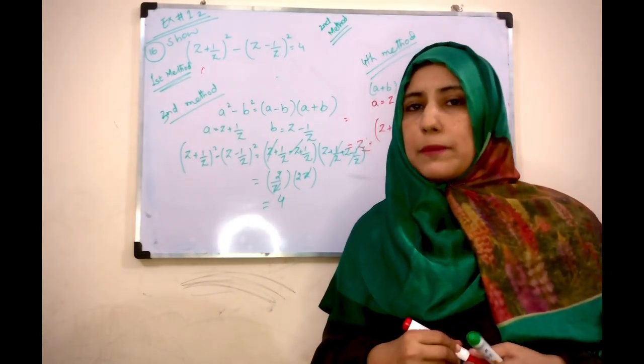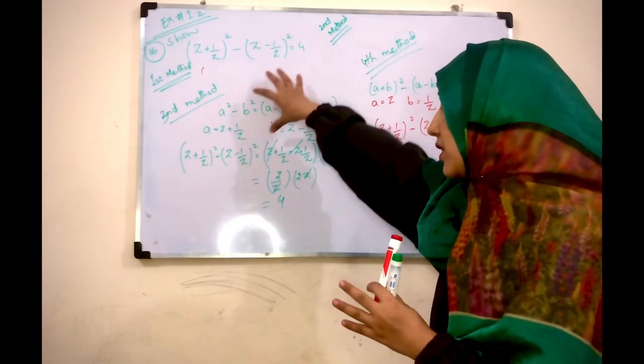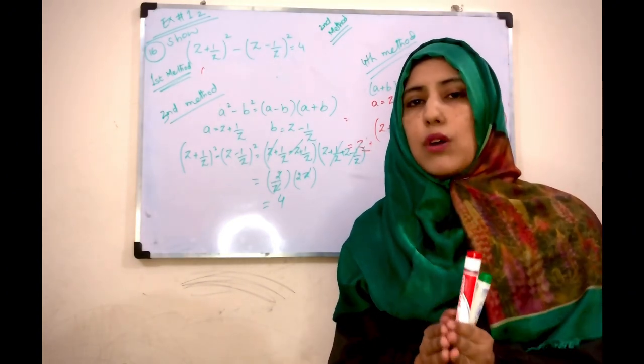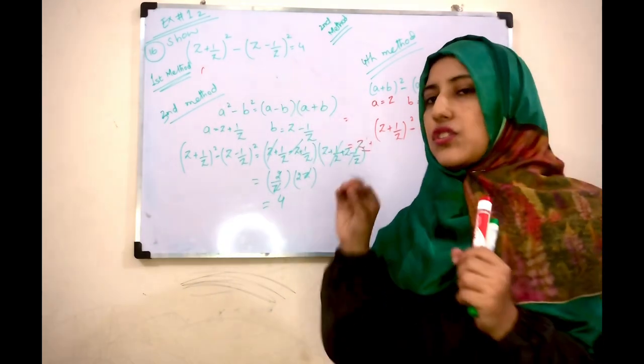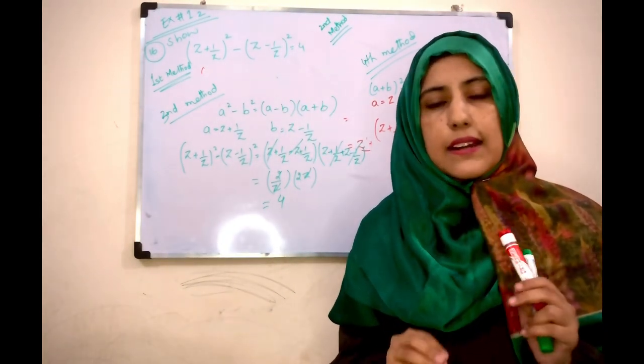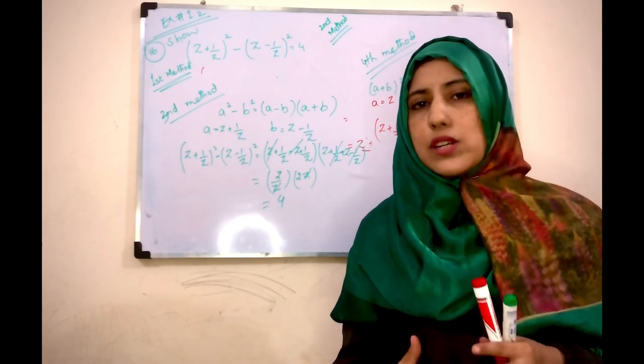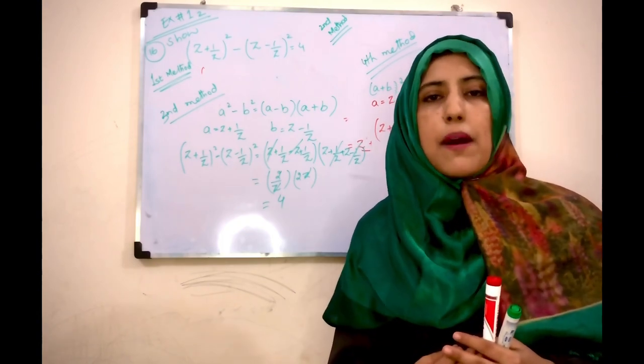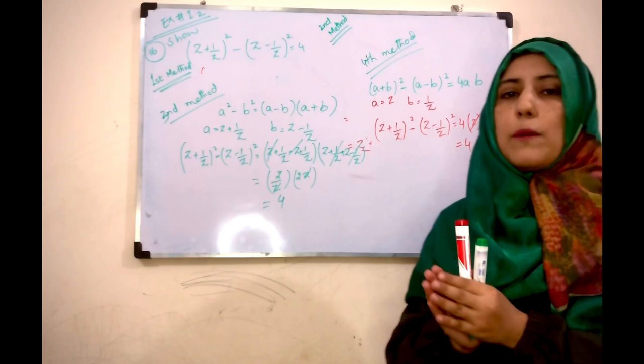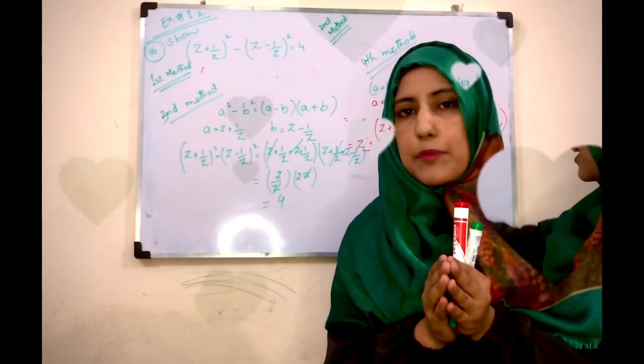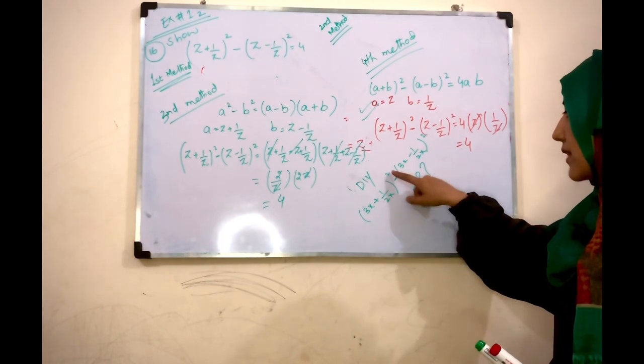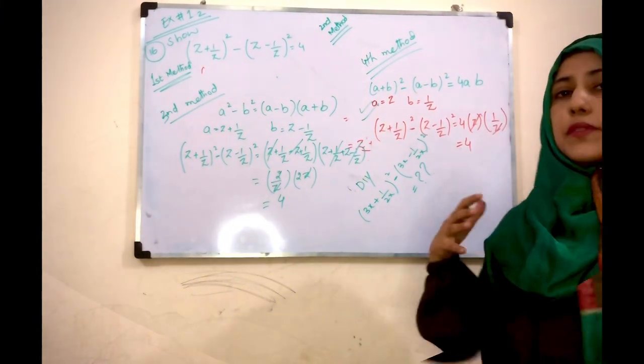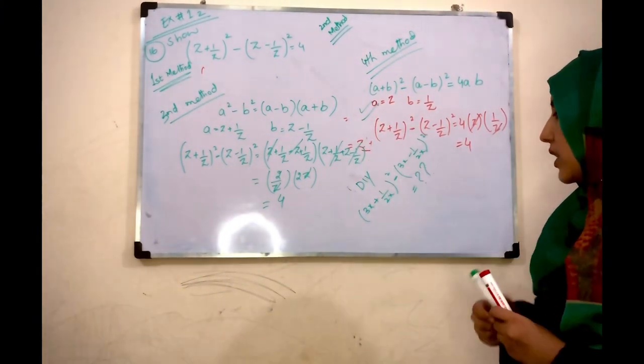But guys, here it's very important to know that if this question is a long part of the exam, you can apply the first three methods. If this question is a short part, then you can apply the fourth method. Check out this: (3x + 1/2x)² minus (3x - 1/2x)². Fourth way, solve this question and answer in the comments.